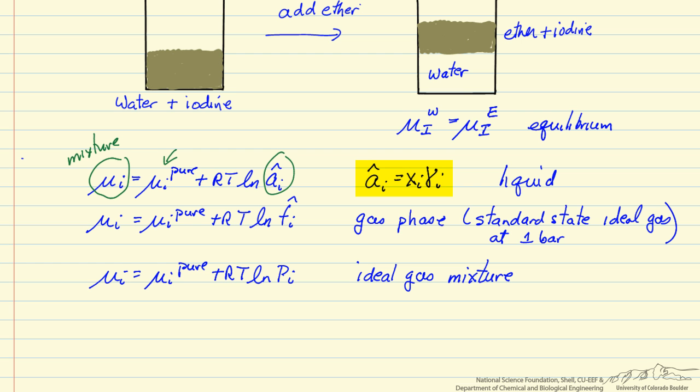It's a mole fraction of the component and the activity coefficient, which depends on what other species are present. If instead we're in gas phase, we typically use fugacity, where our standard state is pure component ideal gas at one bar. So this unit for fugacity must be in bar for this equation to be meaningful.